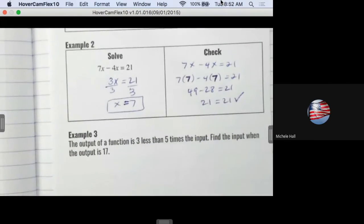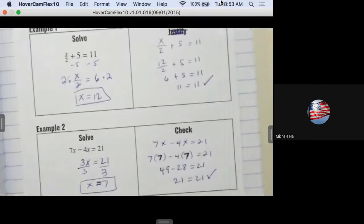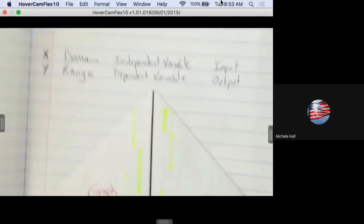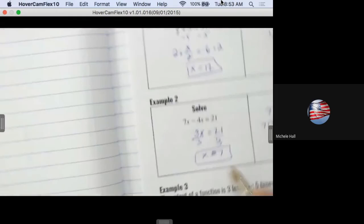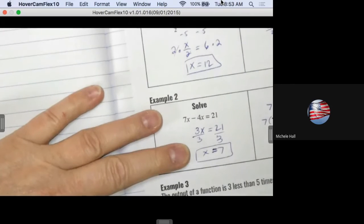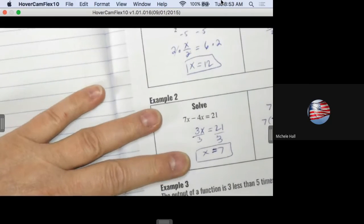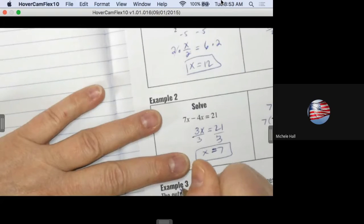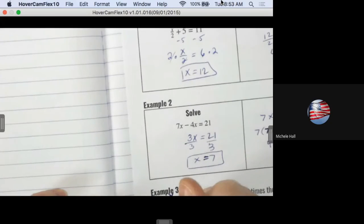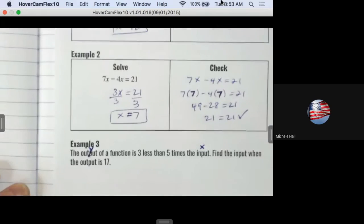The output of a function is three less than five times the input. What does output input stand for? What's output? So if we look at 1.7, we wrote it down in 1.7. So I'm going to put above input, I'm going to put X. And above output, what am I going to put? I'm going to put those there to remind myself when I'm taking a test or I'm doing homework and I look back, I can see where I got those variables from.